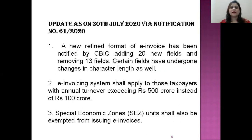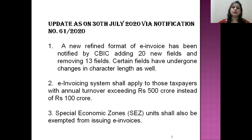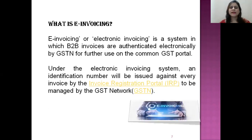In that notification, the e-invoicing system shall apply to those taxpayers with annual turnover exceeding ₹500 crore. So the first notification said that e-invoicing was applicable to taxpayers with annual turnover of ₹500 crore. That means a large number of taxpayers were covered. They also had to exempt certain tax units under that notification.